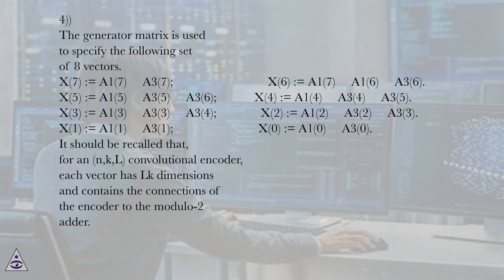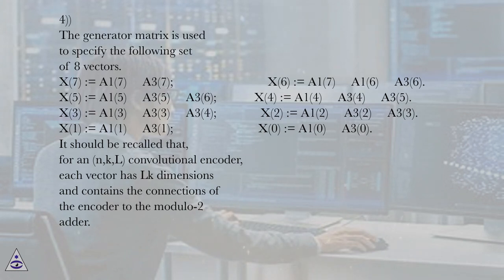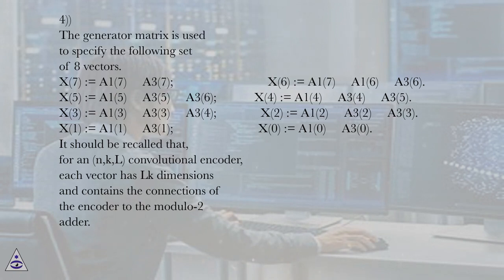The generator matrix is used to specify the following set of 8 vectors: X7 = A17·A37, X6 = A17·A16·A36, X5 = A15·A35·A36, X4 = A14·A34·A36, X3 = A13·A34, X2 = A12·A32·A33, X1 = A11·A31, X0 = A10·A30.